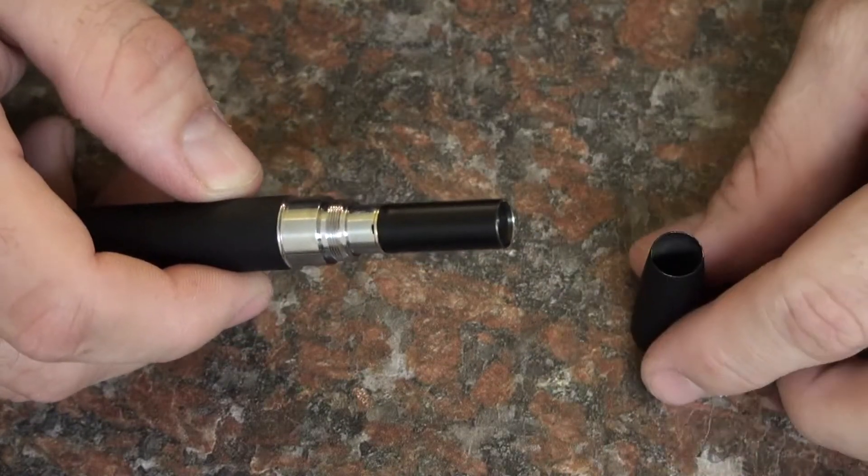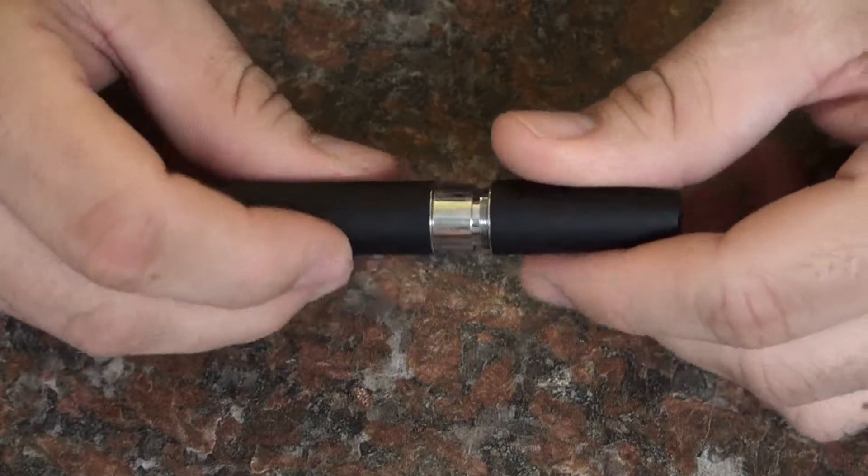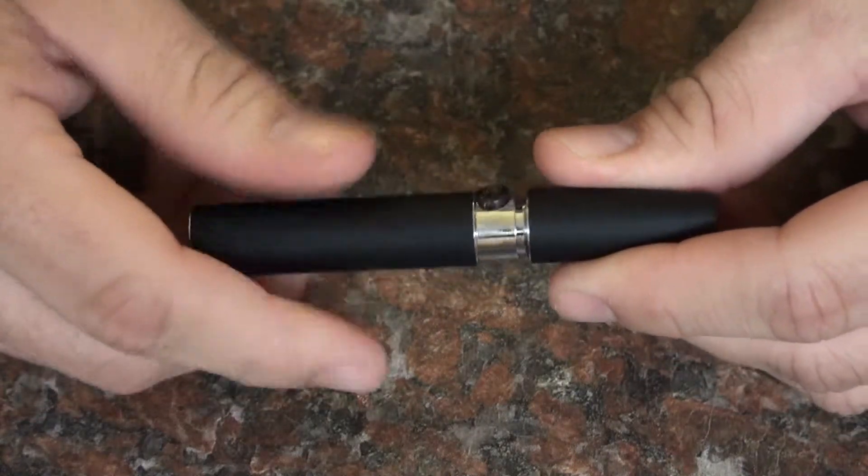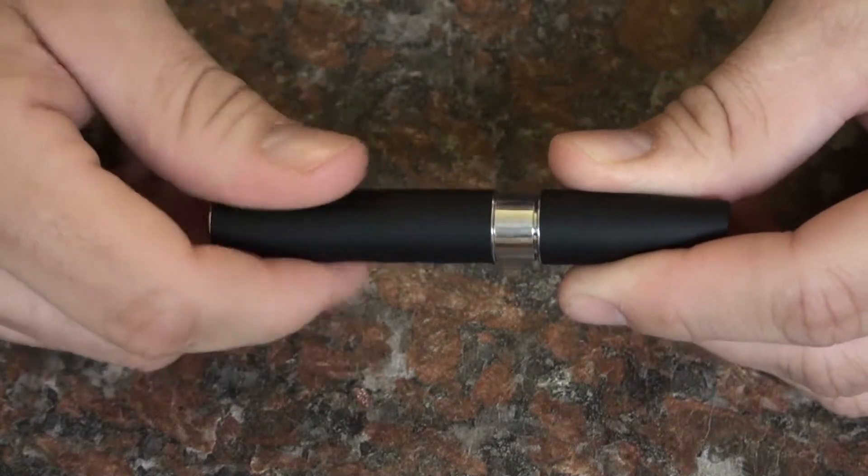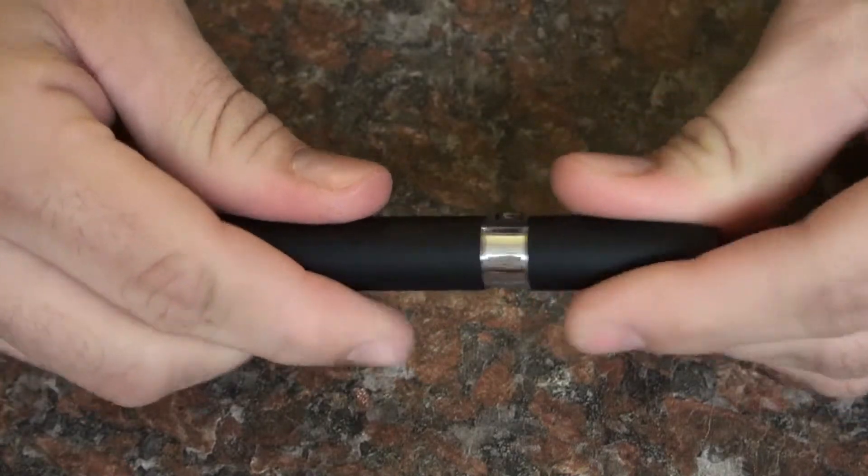Next take your Ego Megasig cone, slip it over the atomizer into the next set of threads on the battery and tighten it once again until snug.